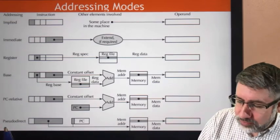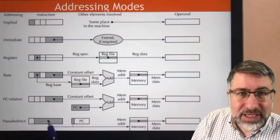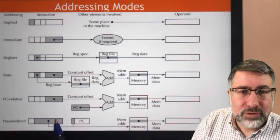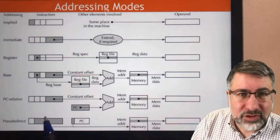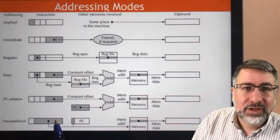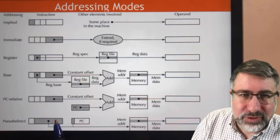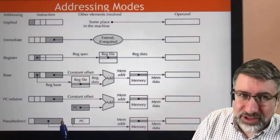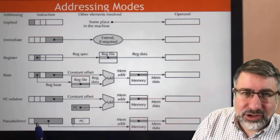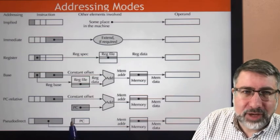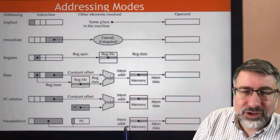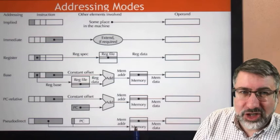And then finally, pseudo-direct. Direct would mean that the full instruction would be in our instruction, the address of the new instruction would be in our instruction. But instead, we have most of the address in our instruction. We have to tack on the top bit of the program counter, and that's used to look up the next instruction in memory.